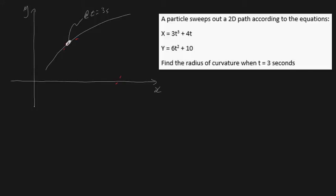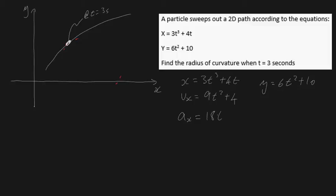Let's copy down our equations of motion. We know x is equal to 3t cubed plus 4t, and y is equal to 6t squared plus 10. When you differentiate, you find velocity in the x direction: vx equals 9t squared plus 4. Differentiating once more gives acceleration ax equals 18t. Now differentiating y: vy equals 12t — the constant 10 disappears — and ay is just equal to 12.